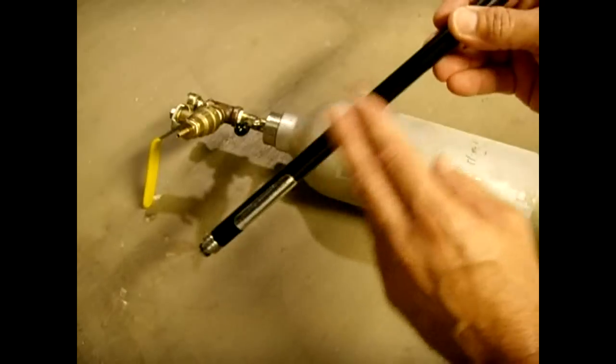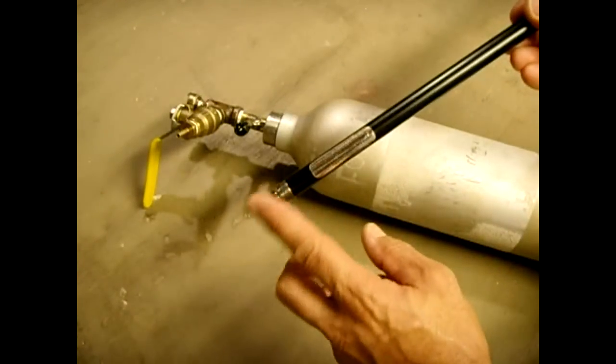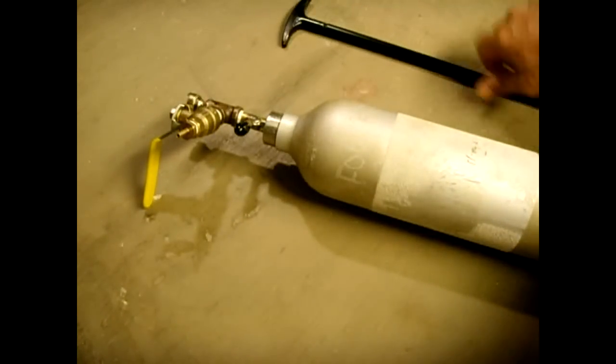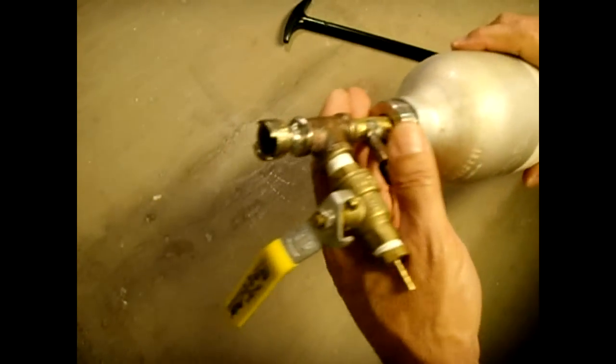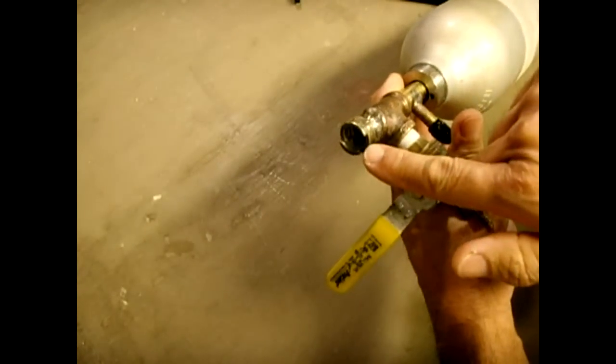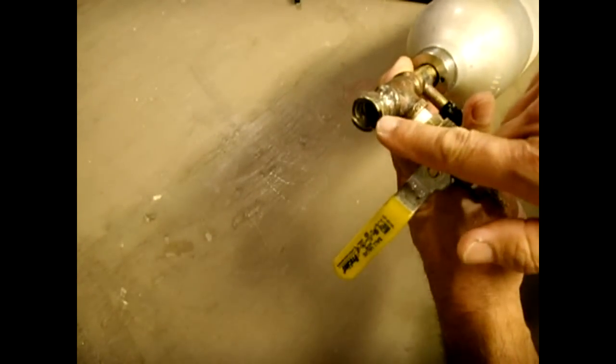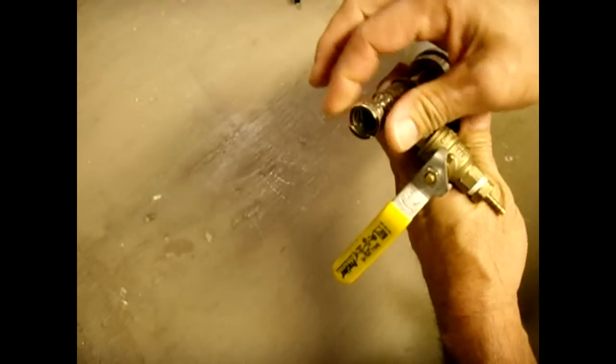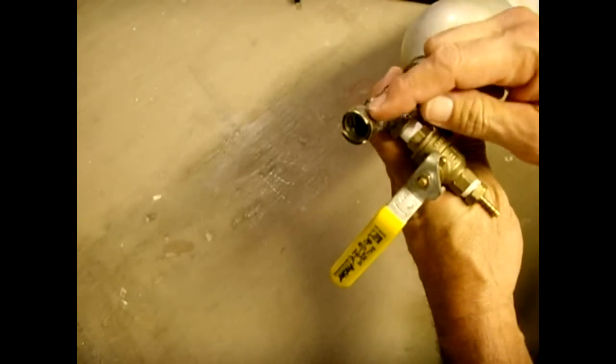He actually had another one of these that was really corroded and wasn't pumping right, and I kept that. I also kept the part of the gun. Right here where the fill valve is, this unscrewed. It's metric, 10 millimeter metric.